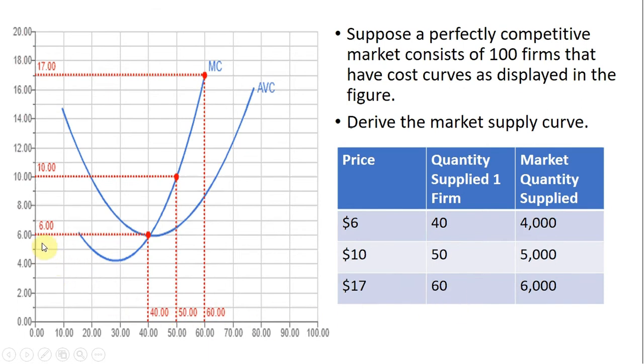Again, at any price below $6, the firm would produce nothing, zero units of output as a way to minimize its losses. So this describes the relationship between price and quantity supplied for one firm, but what about 100 firms?